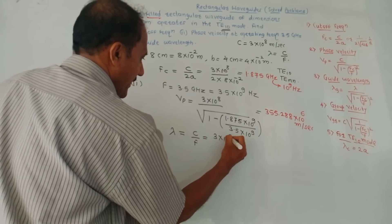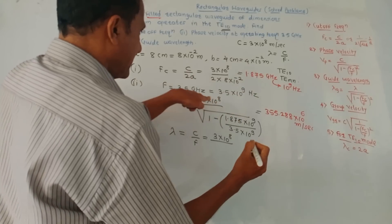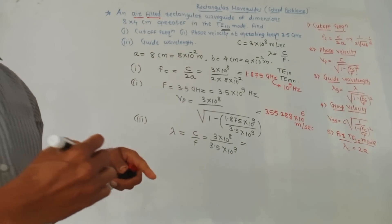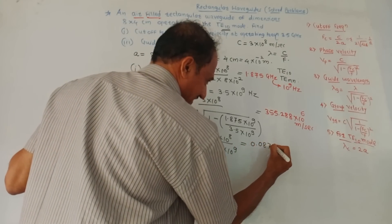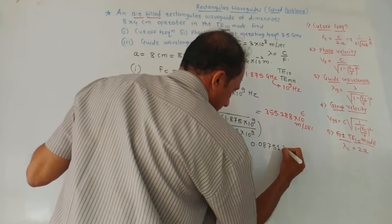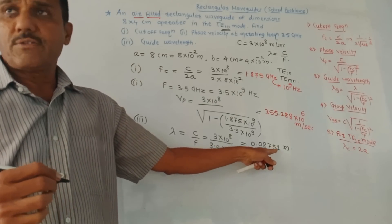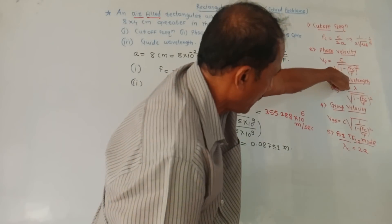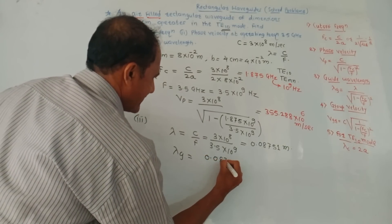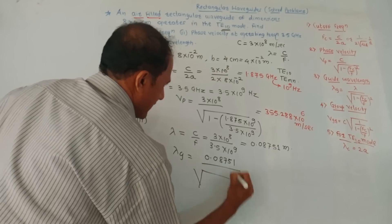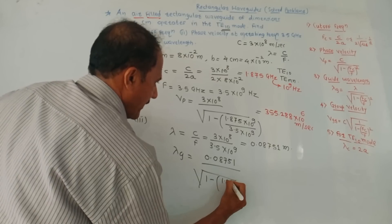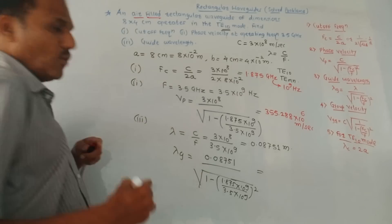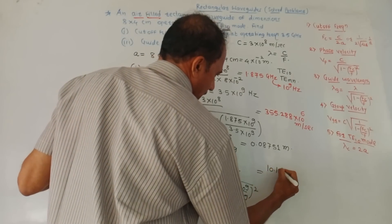Lambda equals c upon f: 3 × 10⁸ upon 3.5 × 10⁹. The answer of this operating wavelength is 0.08751 meters. Now lambda g, using the formula lambda upon square root of 1 minus (fc/f)², is 0.08751 upon square root of 1 minus (1.875 × 10⁹ divided by 3.5 × 10⁹) squared. If you solve this, the answer is 10.15 centimeters.